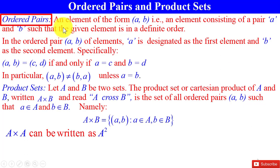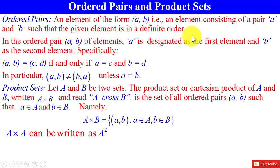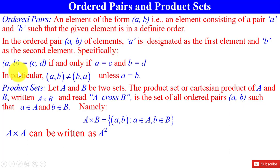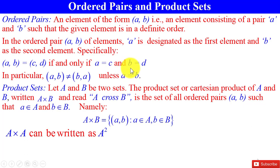Ordered pairs: an element of the form (A, B) is an element consisting of a pair A and B such that the given element is in a definite order. In the ordered pair (A, B), A is designated as the first element and B as the second element. Specifically, two ordered pairs (A, B) and (C, D) are equal if and only if the first components are equal, that is A = C, and the second elements are equal, that is B = D.